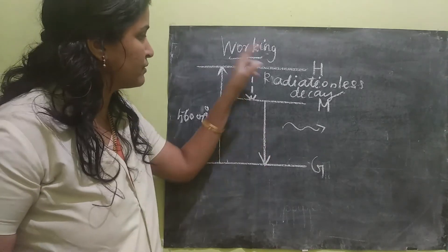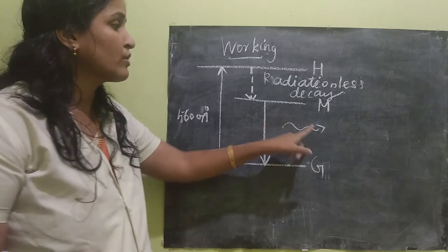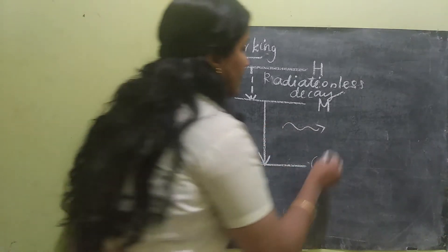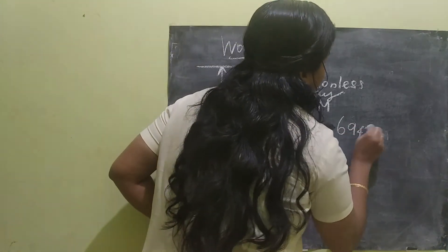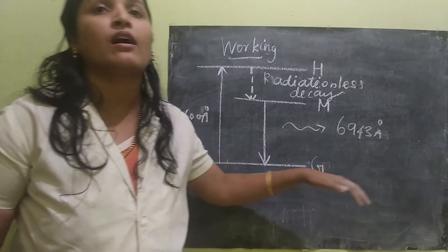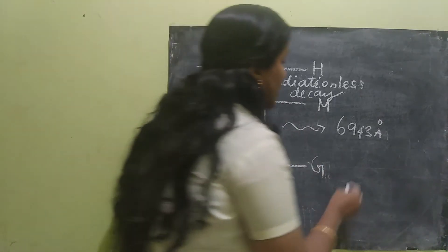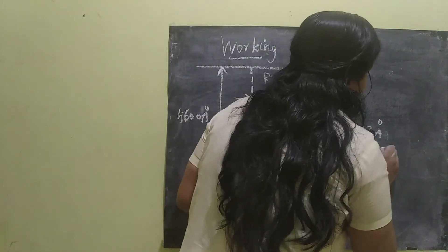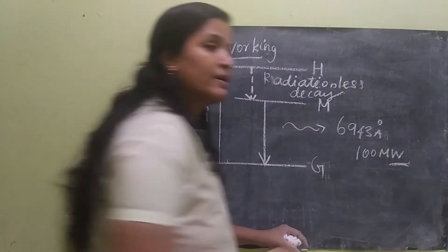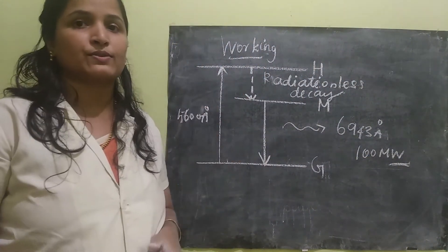By using this principle, the laser beam will be emitted. The wavelength of this laser beam will be 6,943 Armstrong. This beam will be of hundreds of megawatts. The power will be in hundreds of megawatts power. It will be very high power laser and it is pulsed also.